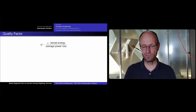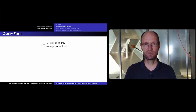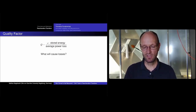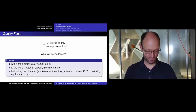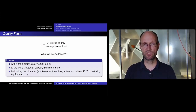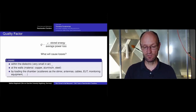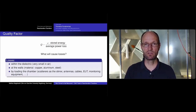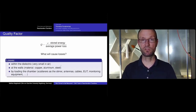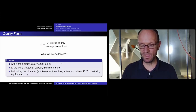The quality factor Q is the angular frequency multiplied by the stored energy, divided by the average power loss per cycle. Losses come from the dielectric inside — usually air, so very small — from the walls made of steel, copper, or aluminum, and from anything placed inside including antennas, cables, and the EUT. At low frequencies, the highest losses often come from the antennas because they have a large effective area at long wavelengths.